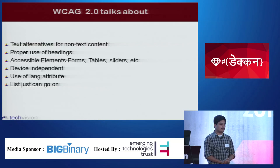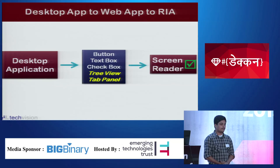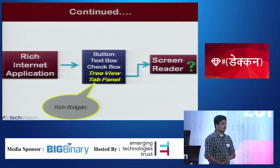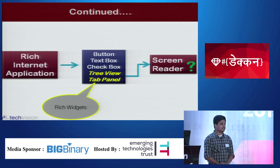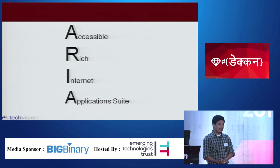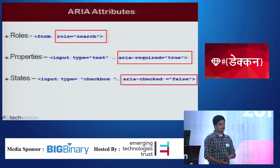Suppose in a website there are rich widgets like tree view or tab panel. These are non-native HTML elements, and the screen reader will not be able to read these rich widgets as-is, creating an accessibility issue. So how do rich internet applications become accessible? There is a different guideline called WAI-ARIA — Web Accessibility Initiative Accessible Rich Internet Applications. Our Viable gem also uses these guidelines. The ARIA guideline has ARIA properties, ARIA states, and ARIA roles for making web content accessible.